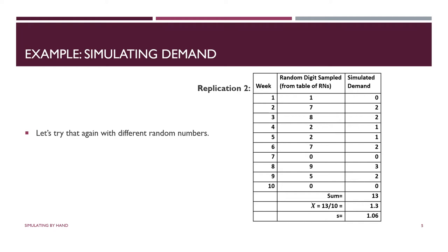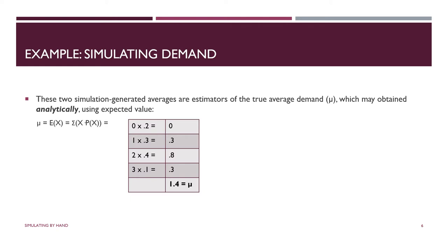We just get the expected value — taking each value and each outcome in the probability distribution, multiplying it by the probability, adding all those products up, and you end up with 1.4. So the actual mu, the actual average weekly demand of the probability distribution, is 1.4. You're not going to get the exact same value every time; the probability of getting 1.4 from a sample is pretty much zero. But every time you generate another sample, you're going to get another sample estimate. Simulation is very similar to what you've already been doing in your statistics courses — it's just that you're collecting the data from an algorithm instead of collecting it out there in the world.